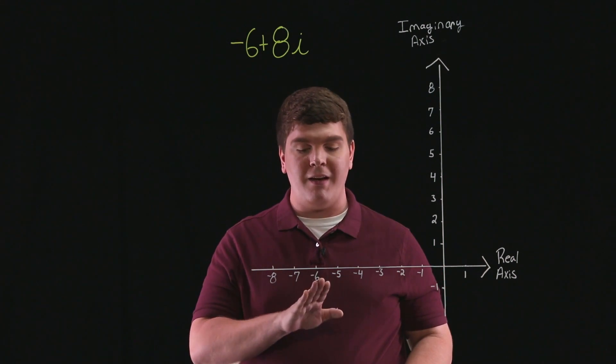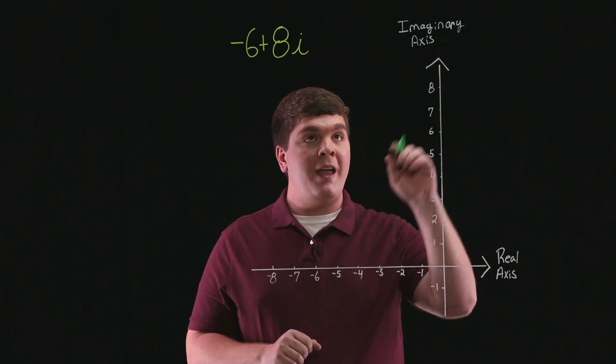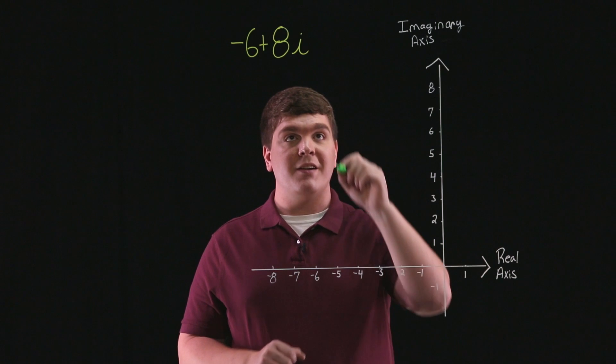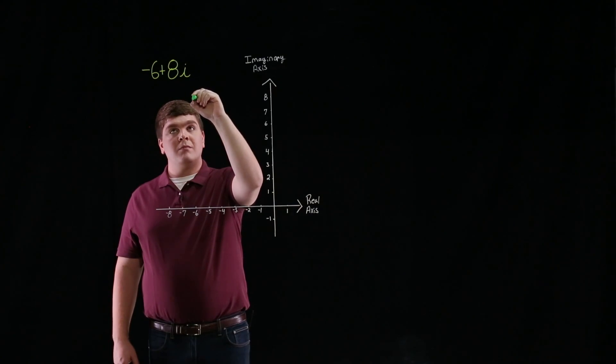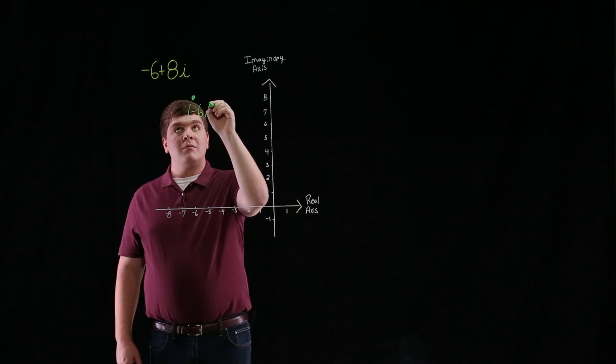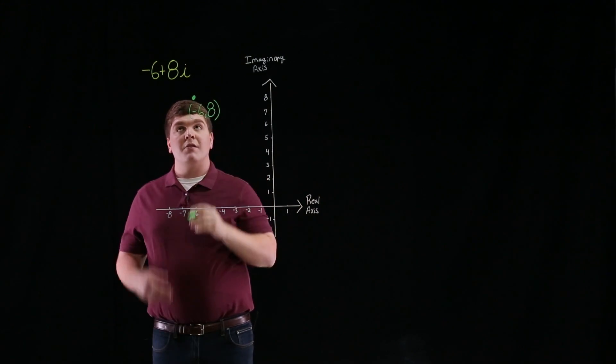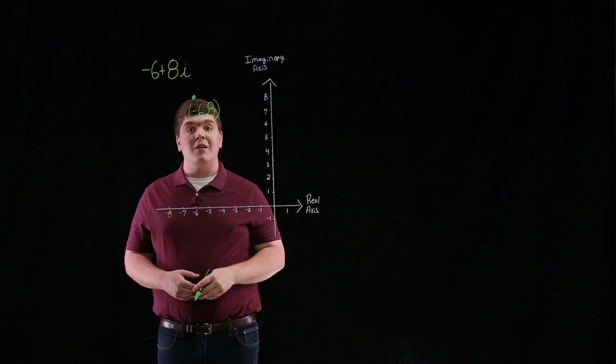So we'll plot this point at negative 6 on the real axis and 8 on the imaginary axis. So there is the point negative 6 plus 8i.